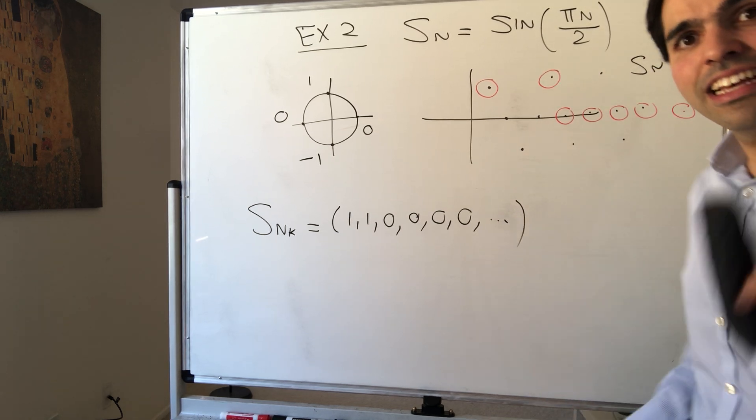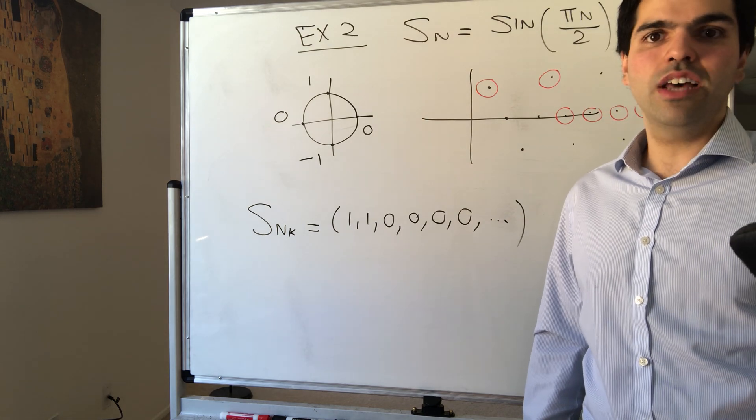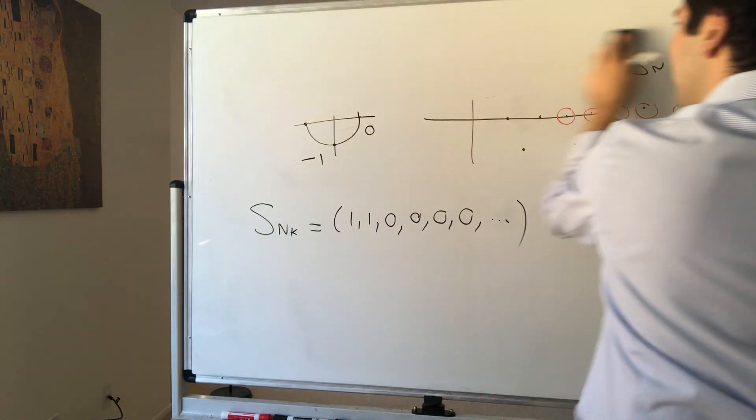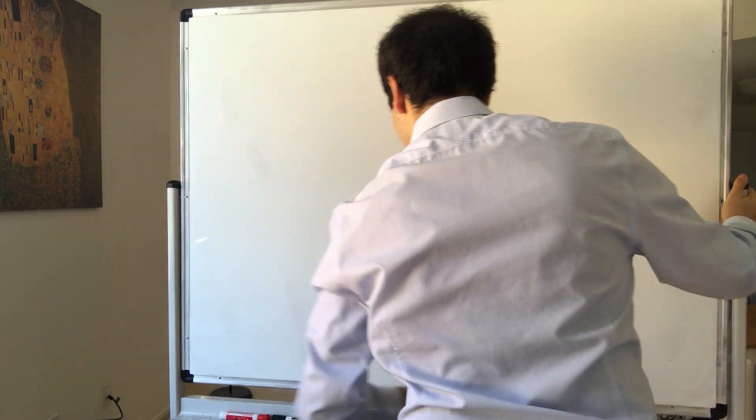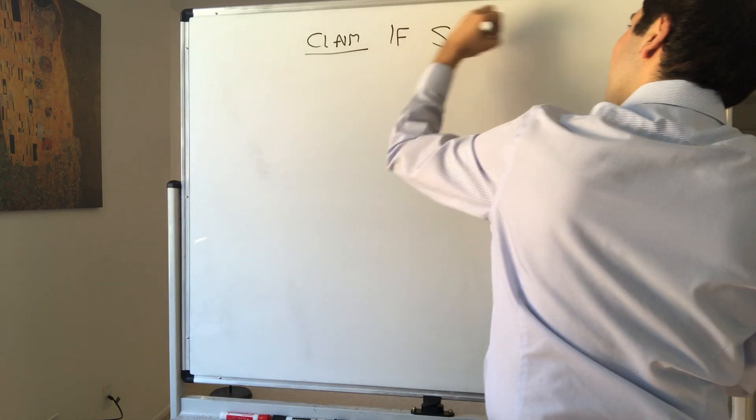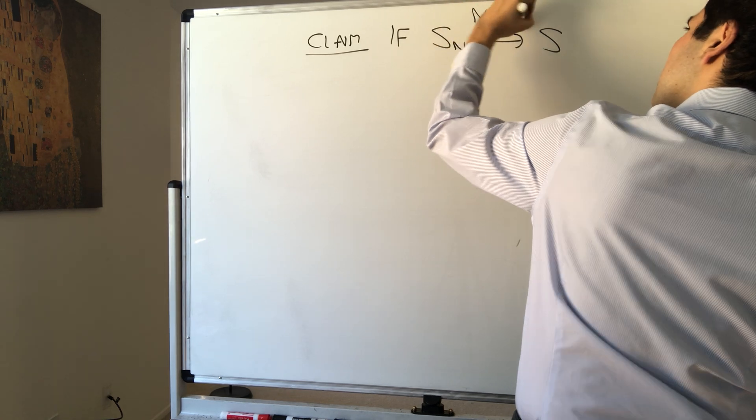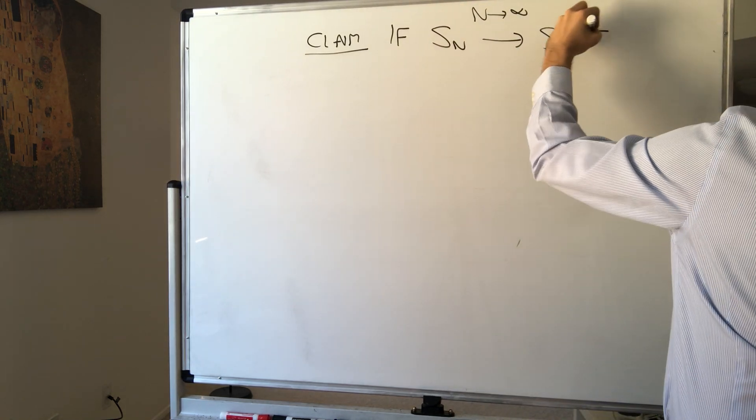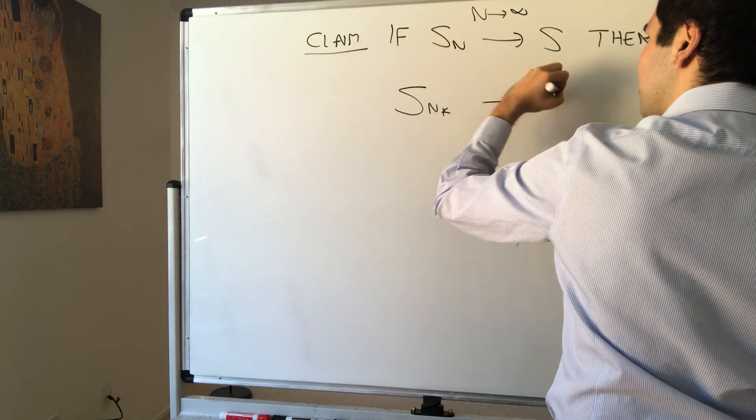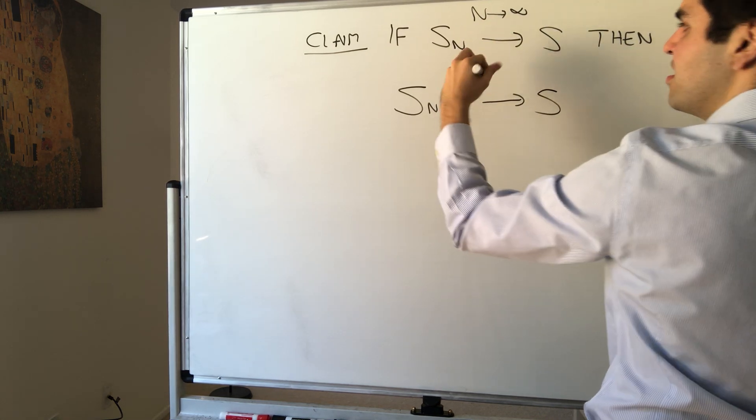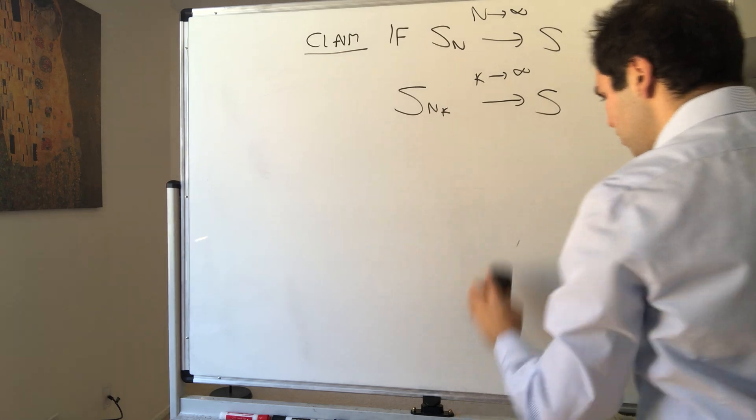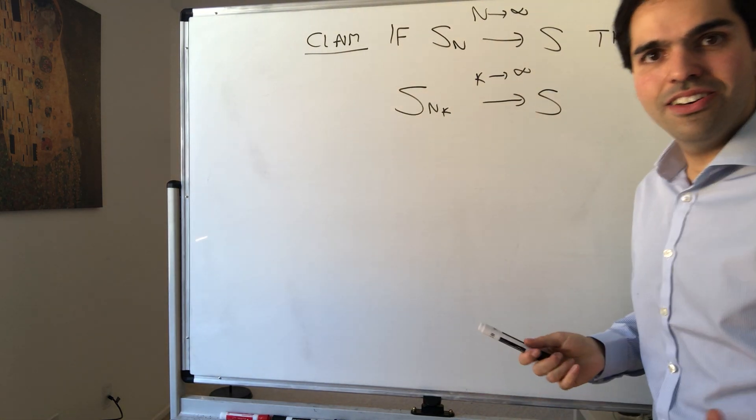Namely, if the sequence itself converges, then every subsequence must converge to the same limit. In other words, let's quickly prove the following fact. If Sn converges to S, so here as n goes to infinity, then for any subsequence, Snk converges to S as well. Except, careful, here is the convergence as n goes to infinity. Here is the convergence as k goes to infinity. And in some sense this makes sense.